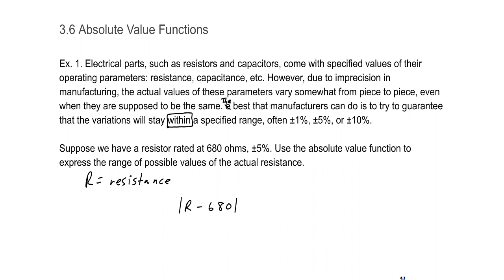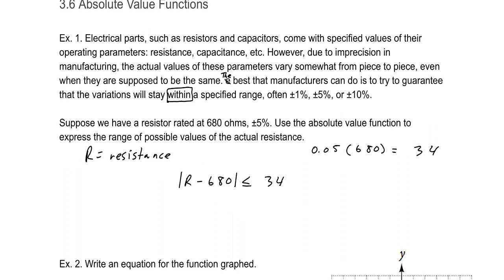Now we want that to be within this specific range, and I want to emphasize that word 'within'—this is where this comes in. Less than or equal to. The distance between the actual and the theoretical 680 is going to be less than or equal to whatever our range is. In this case, 5%. So 5% of 680 is 34. We want our resistance to be within 34 ohms of 680 ohms. And that is how we would write that.